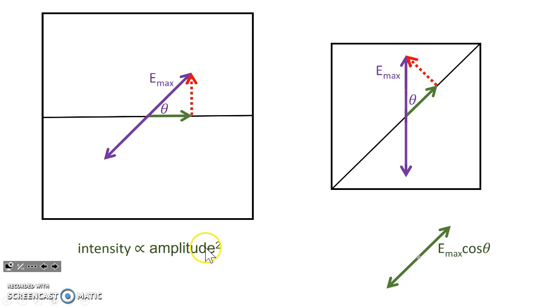Intensity we know is proportional to amplitude squared. So if you multiply by cosine, the intensity will be multiplied by cosine squared.